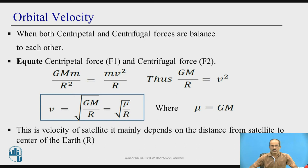Therefore, v = √(G·M / R), which is also equal to √(μ / R), where μ = G·M. This velocity always depends on the distance R from the satellite to the earth's center. Since G is the gravitational constant and M is the mass of the earth, both are constants. So only R can change, and therefore the velocity depends on R.